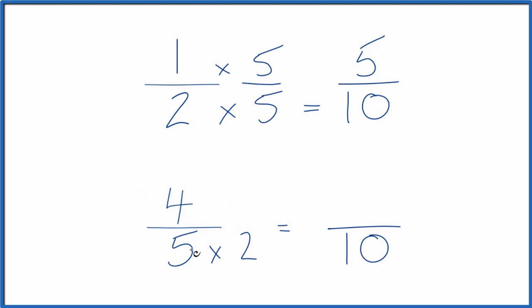Then down here, we've multiplied five times two. So we also need to multiply the numerator by two over two, which is just one. So four times two is eight. We have eight-tenths.